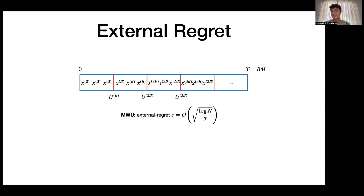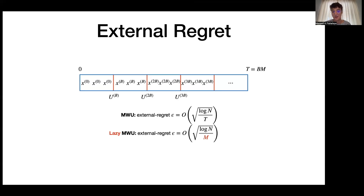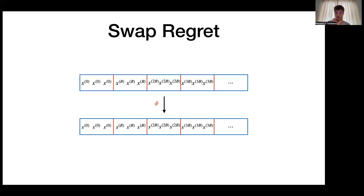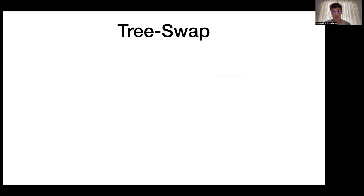Why use Lazy MWU? The benefit is that over the course of Lazy MWU, we play fewer distinct actions. Under swap regret, the same action must always be mapped to the same transformed action. So for any swap transformation of this history of play, the transformed actions are also constant within each block. Restricting the set of transformations in this way is the key to the Tree Swap algorithm.